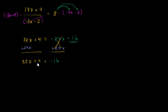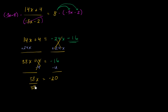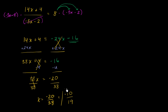Now we just have to get rid of this 4. Let's subtract 4 from both sides. In the home stretch now — we are left with 38x is equal to negative 16 minus 4, which is negative 20. We divide both sides by 38, and we get x equals negative 20 over 38, which simplifies further. Both numerator and denominator are divisible by 2, giving us x equals negative 10 over 19.